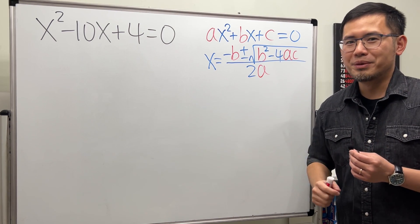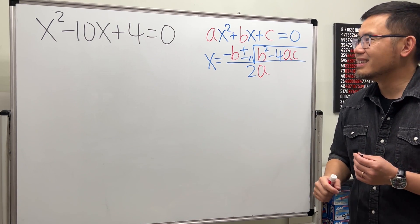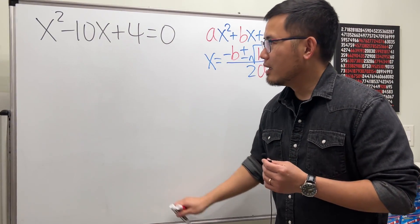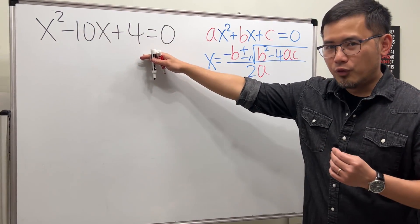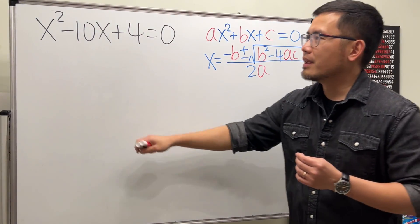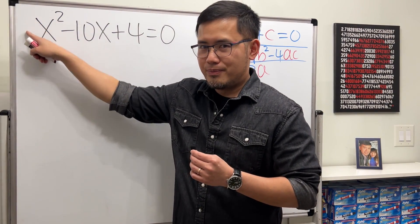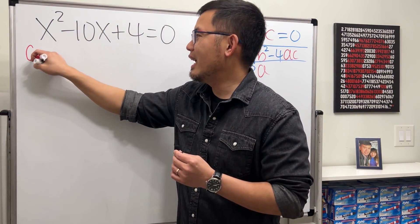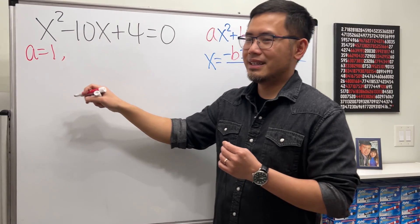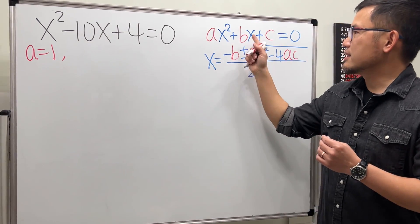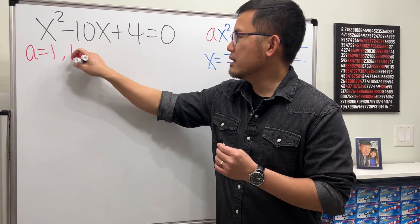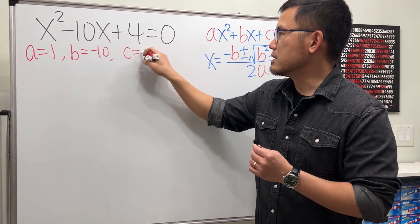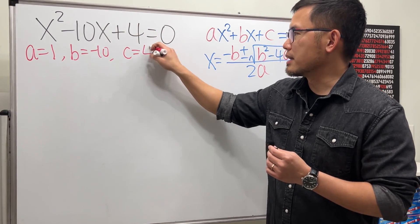So let's go back. We have the equation already in standard form. A is right here — it's 1. You don't see it written, but it's there: a equals 1. Next, b is negative 10. Lastly, c is equal to positive 4.